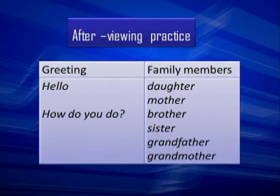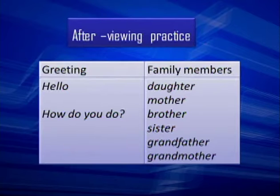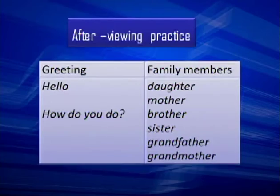We are going to continue, because you may be asking yourselves: we are not members of the royal family, so what about the other family members? Let's see the next poster. Here you have: if you have a daughter, it's because you have a mother and a father. You may have brothers. If you have a brother and you are a girl, then you are the sister. And in most families, we have grandfather and grandmother. Father, mother, daughter, grandmother, sister.